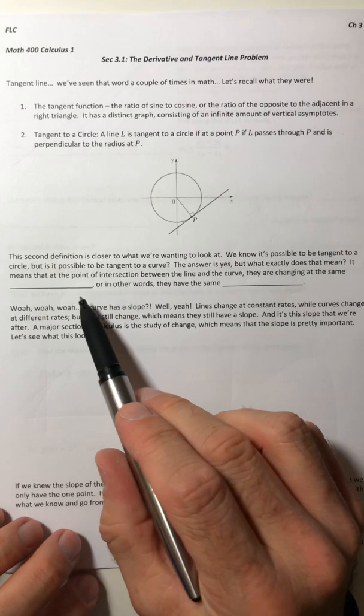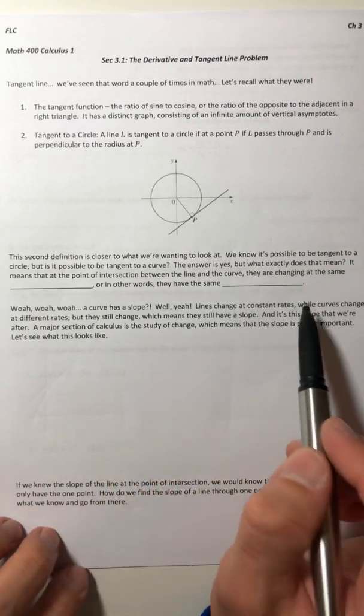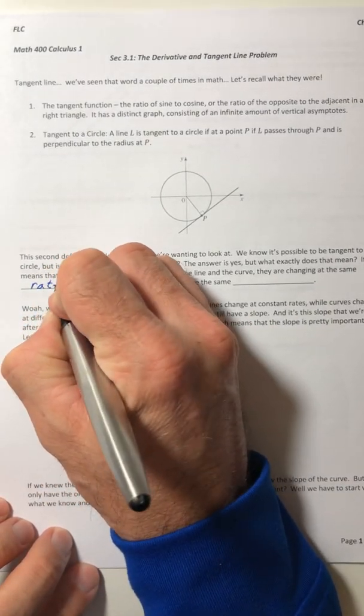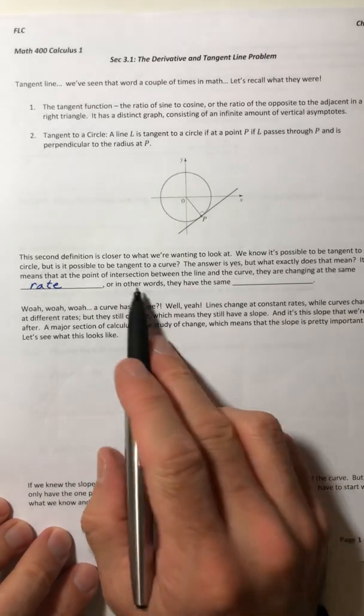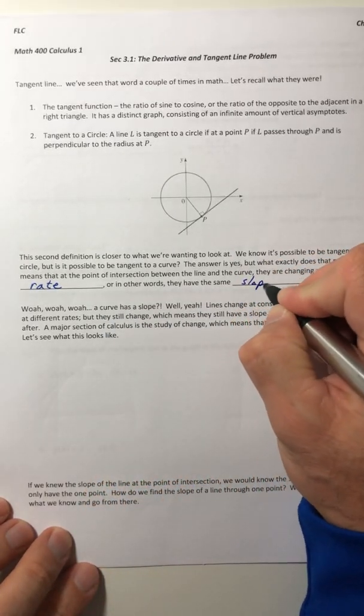So, let's see what that means. It means that at the point of intersection between the line and the curve, they're changing at the same rate. Or in other words, they have the same slope.